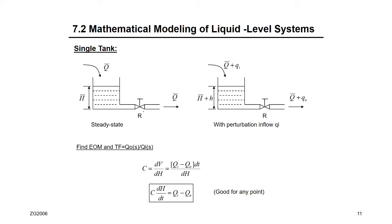We have a single tank with a single valve. Before the dynamic system starts, everything was at steady state — that is, for T less than zero. Whenever you see a bar notation, it means steady state: not changing with time. So the flow into the tank is steady Q-bar, the flow out through the valve is also steady Q-bar, and the head inside the tank is also steady H-bar.